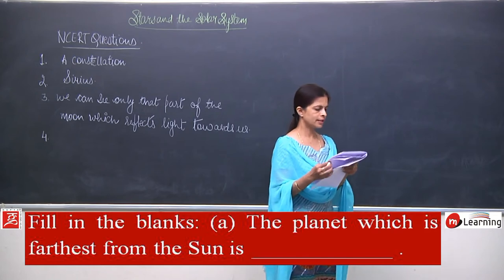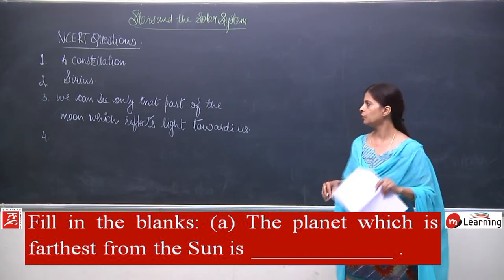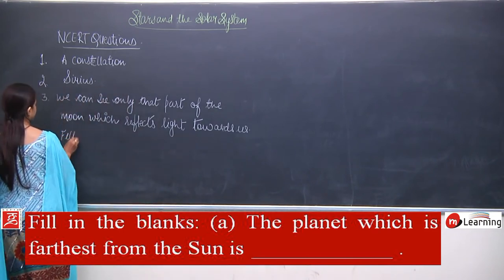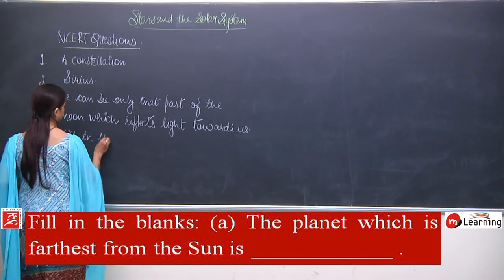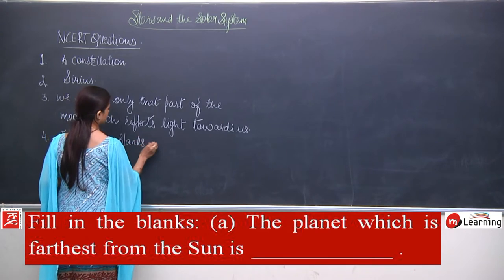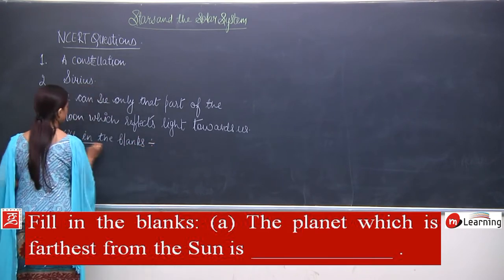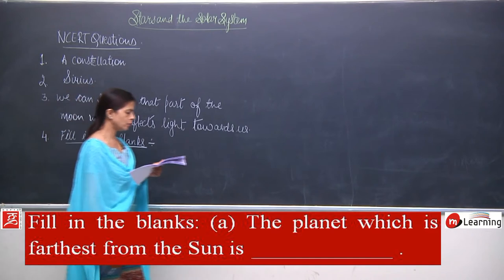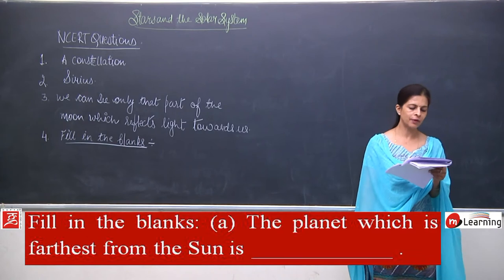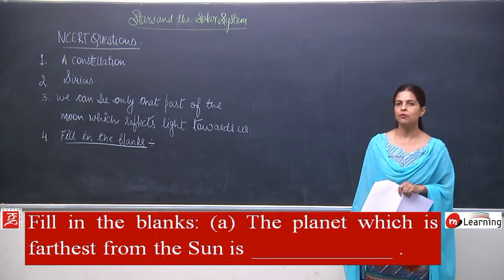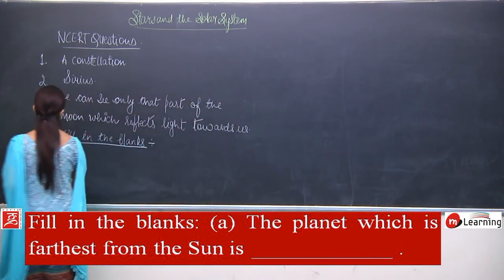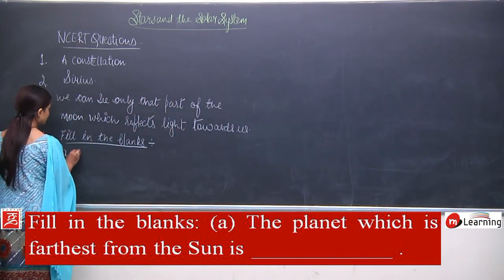Now question number 4 is fill in the blanks. Part A: the planet which is farthest from the sun is — we all know Neptune is the farthest one. So the answer to A is Neptune.